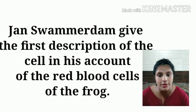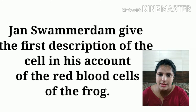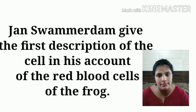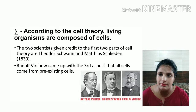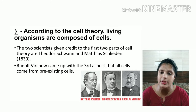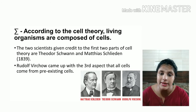Jan Swammerdam did study on RBC of frogs. Robert Hooke is a very important scientist — questions about him are very common in exams. Later, three scientists — Schleiden, Schwann, and Rudolph Virchow — also contributed to the study of the cell and together gave a theory known as cell theory.